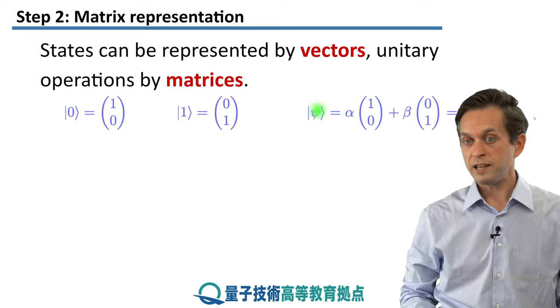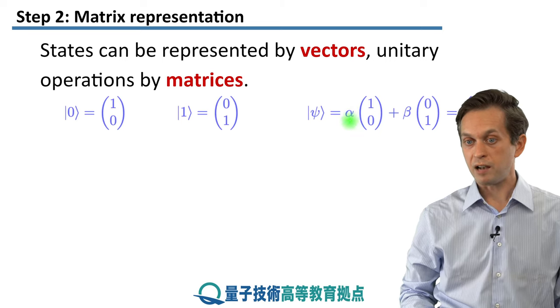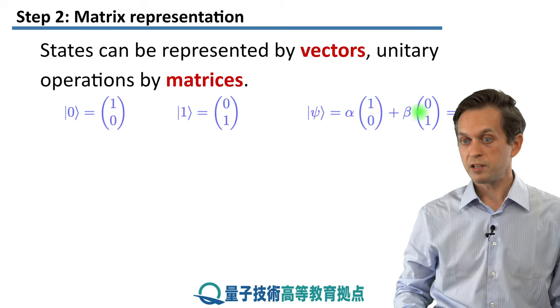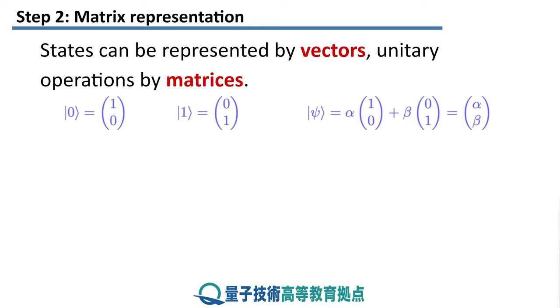So then you can see that any general state ψ can be represented as α times the vector 1, 0 plus β times 0, 1. Or in other words, it can just be represented as a complex column vector α, β.